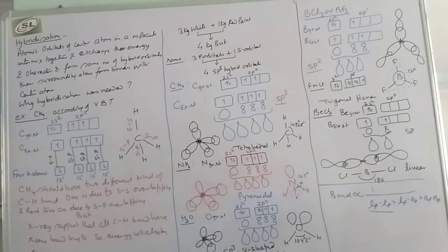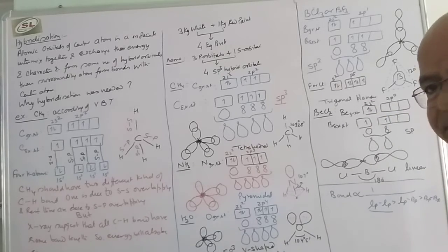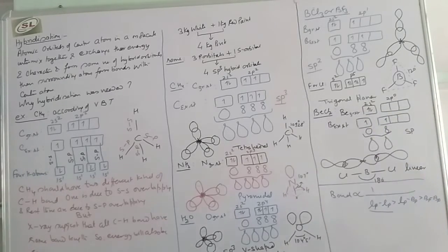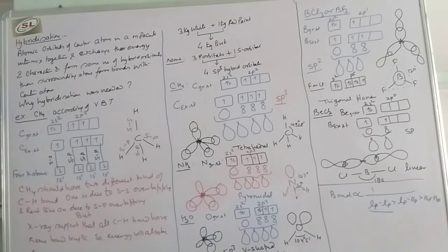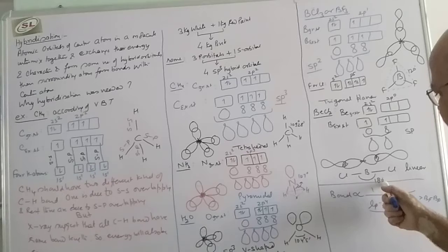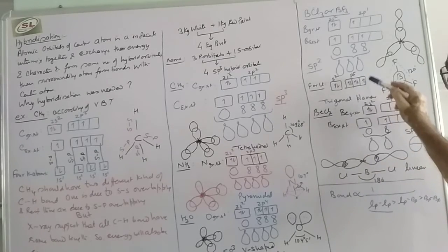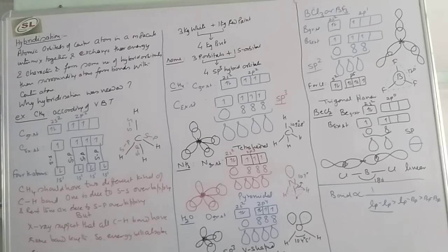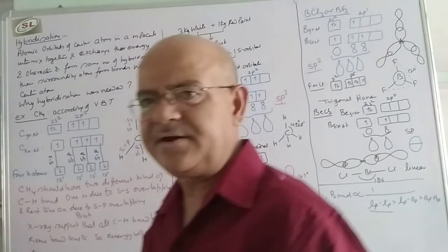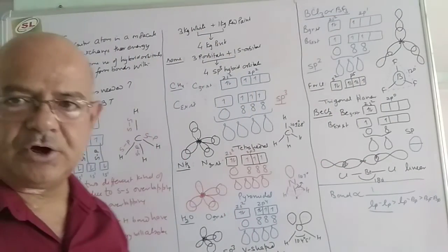For BeCl2: beryllium is the center atom; the ground state configuration is 2s² 2p⁰. In the excited state, 1 electron goes to the 2p orbital. Only 1s and 1p go into hybridization, forming 2 sp hybrid orbitals. They arrange at an angle of 180° — as if we divide a circle into 2 parts. The combining atom is Cl, so we draw dumbbells here. BeCl2 therefore has a linear geometry. In this way, we can find the hybridization of different molecules.